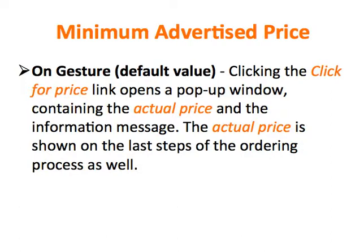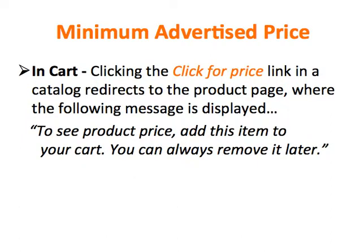The actual price is shown on the last steps of the ordering process. For the In Cart setting, clicking the Click for Price link in a catalog redirects to the Product page, where the following message is displayed: 'To see Product Price, add this item to your cart. You can always remove it later.' The What's This link is also included, which points to further explanations. The actual price of the product is displayed after it is added to the shopping cart.